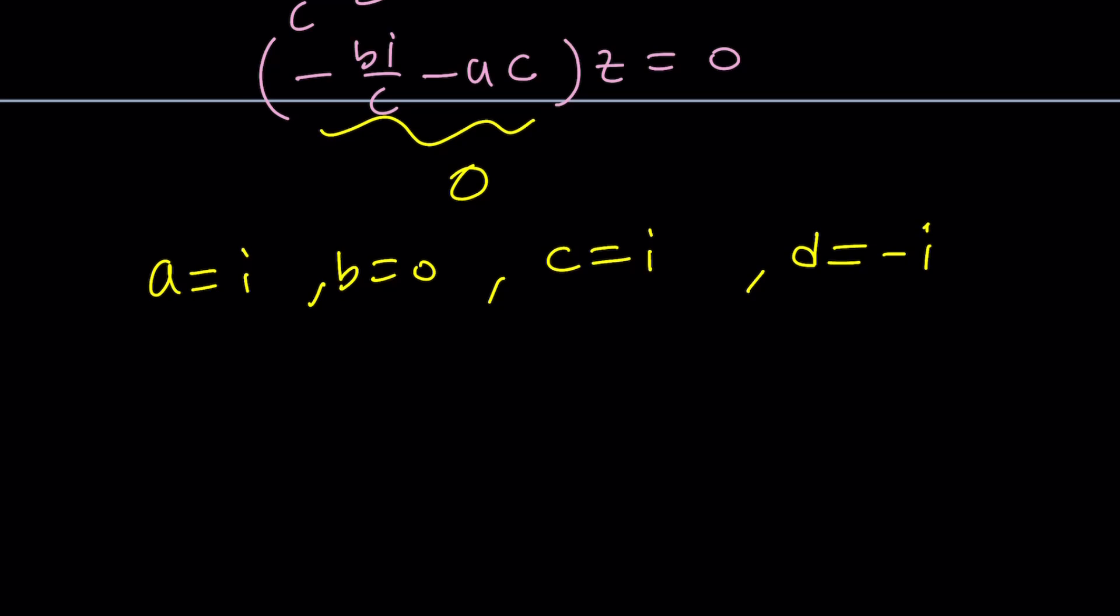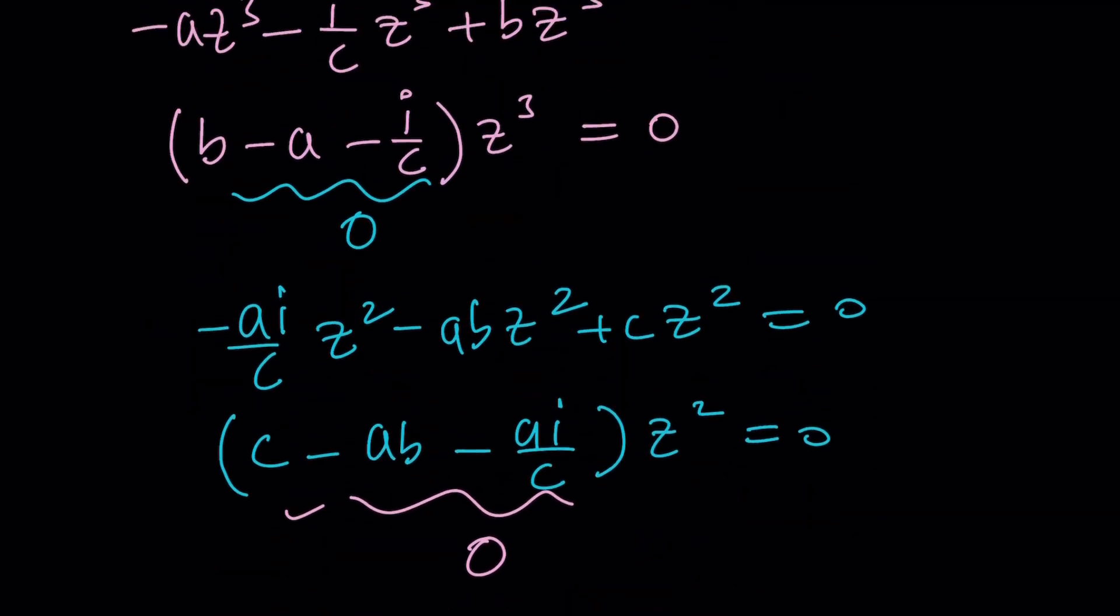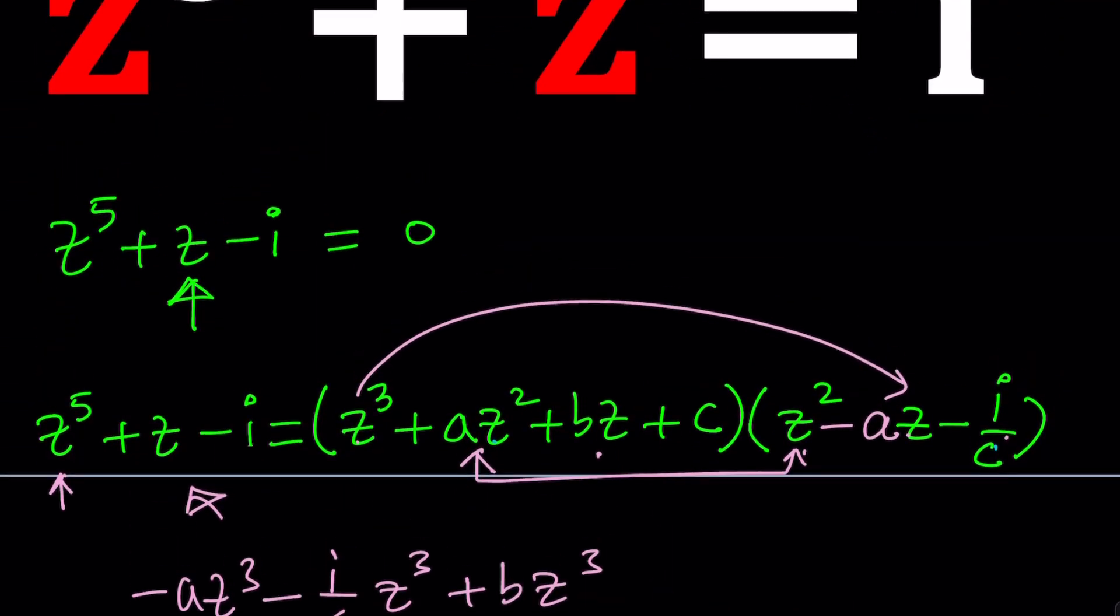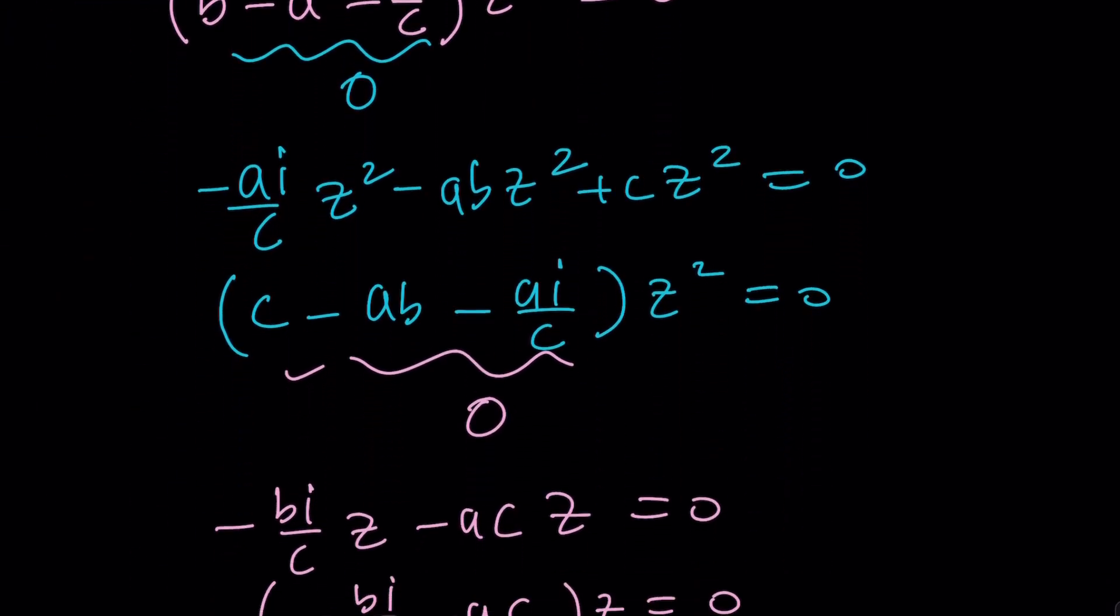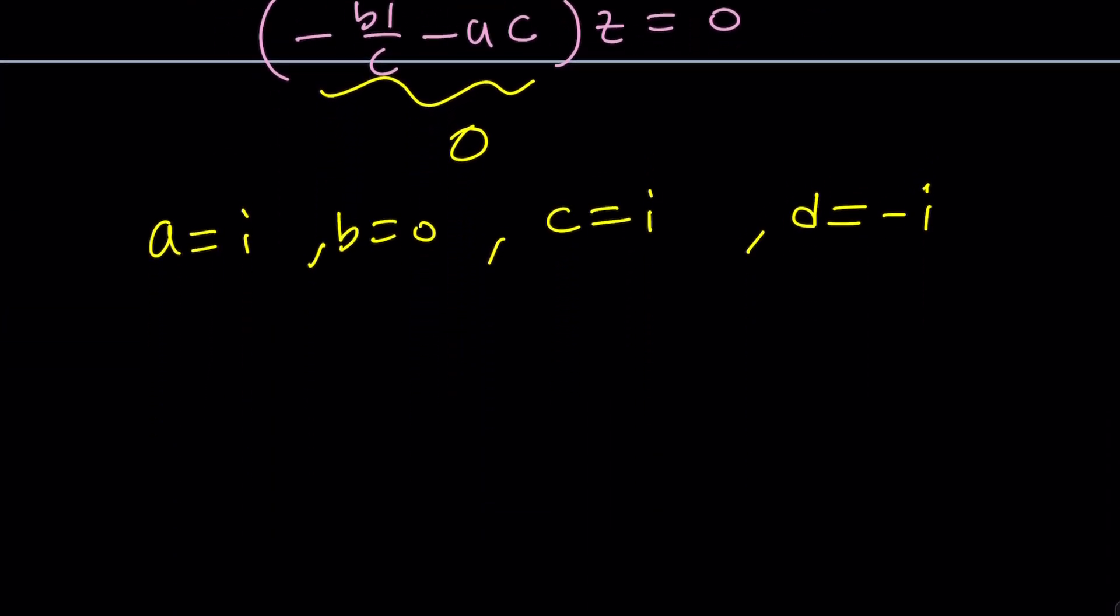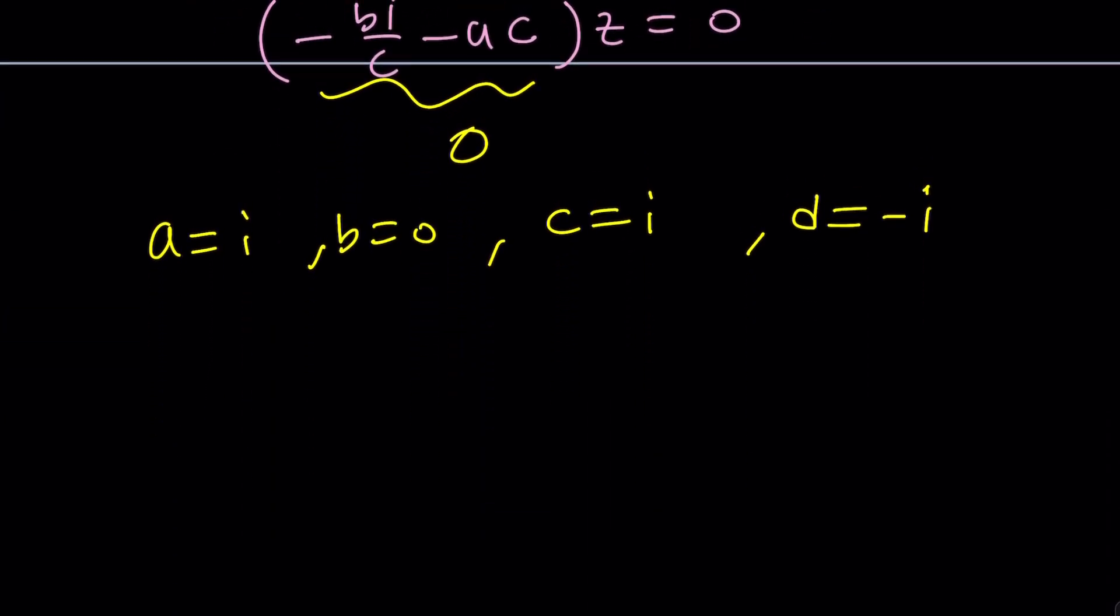Well, I didn't solve for D. I kind of got rid of it. But the thing is, if you know A, then you know D, right? Because A plus D is equal to zero. Cool. Let's go ahead and plug these in and see what we get from here.